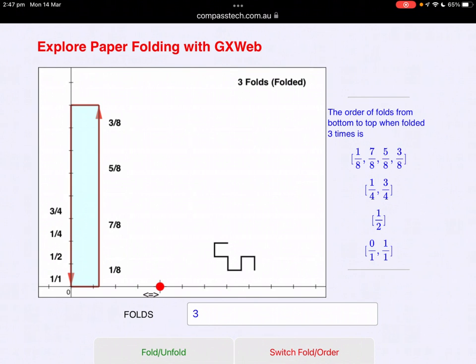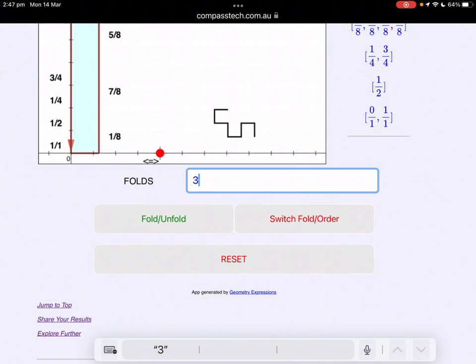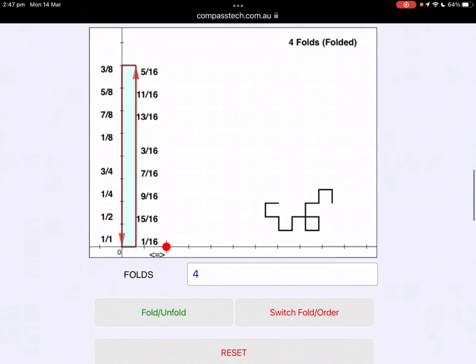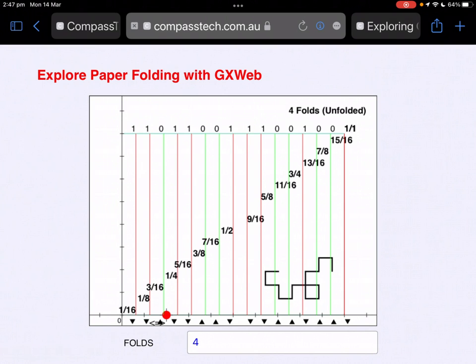You might also notice at the right bottom edge of the page an interesting shape beginning to build. This is our dragon curve. It represents each of the folds in turn. It's more readily seen when the page is unfolded. Each of the folds when you unfold the page will either point up or down. The order of that defines our dragon curve.